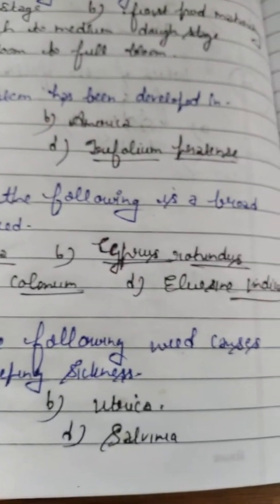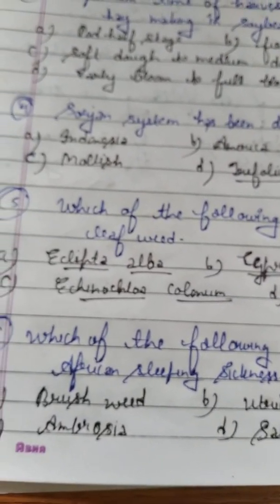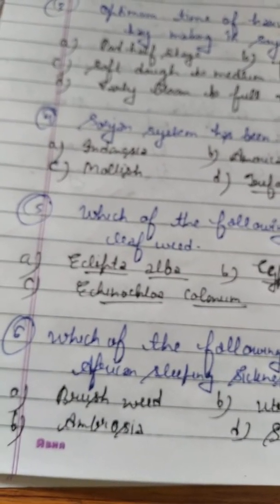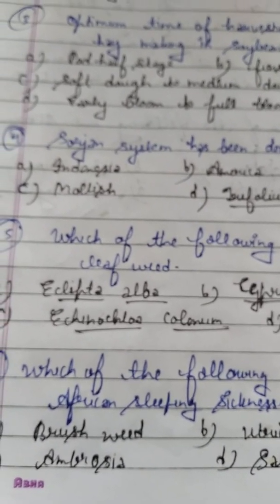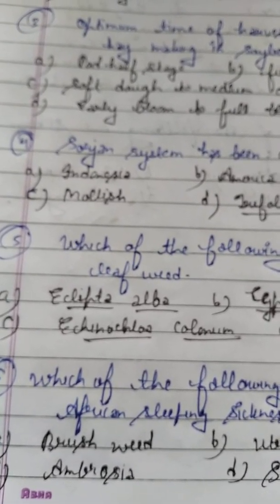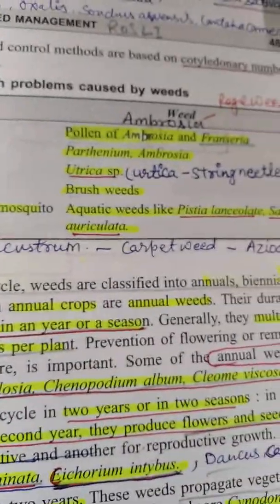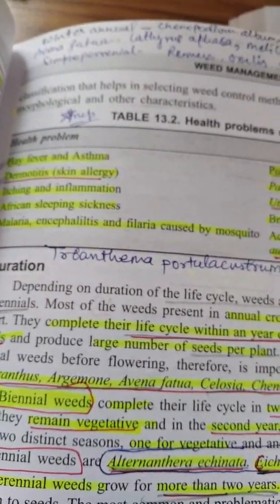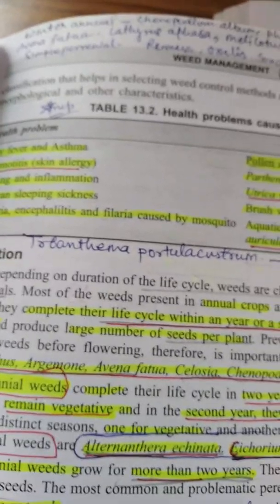Question number 6: Which of the following weed causes African sleeping sickness? Option A: Brush weed. Option B: Urtica. Option C: Ambrosia. Option D: Salvinia. Regarding diseases caused by weeds — hay fever and asthma are caused by pollen of Ambrosia. Dermatitis (skin allergy) is caused by Parthenium hysterophorus and Ambrosia. Urtica causes itching and inflammation. African sleeping sickness is caused by brush weed. So brush weed is the correct answer.